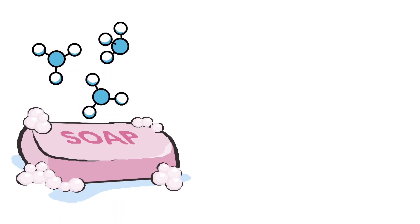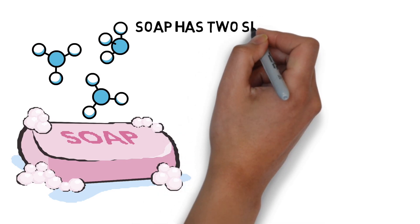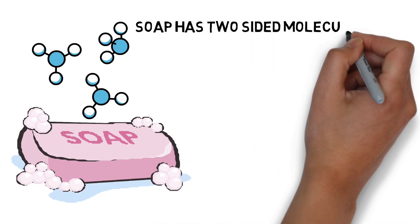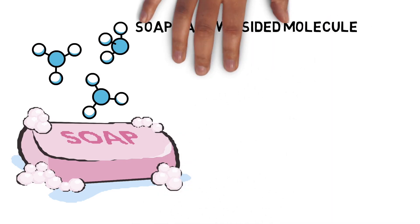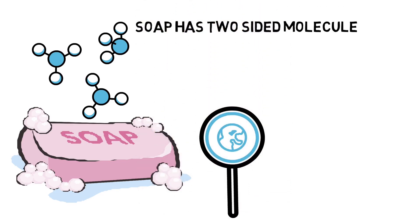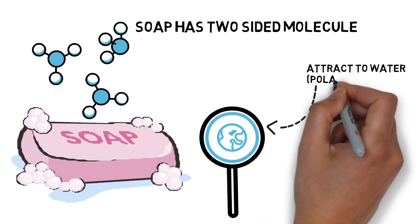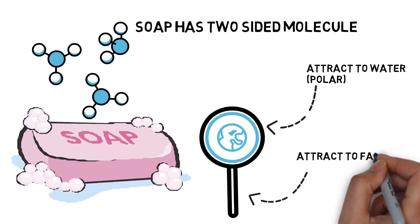I am going to show you the soap structure. Soap's structure is like a lollipop. One side is a polar head and one side is a non-polar tail. One side is polar and water-attracting, and the other side is non-polar.